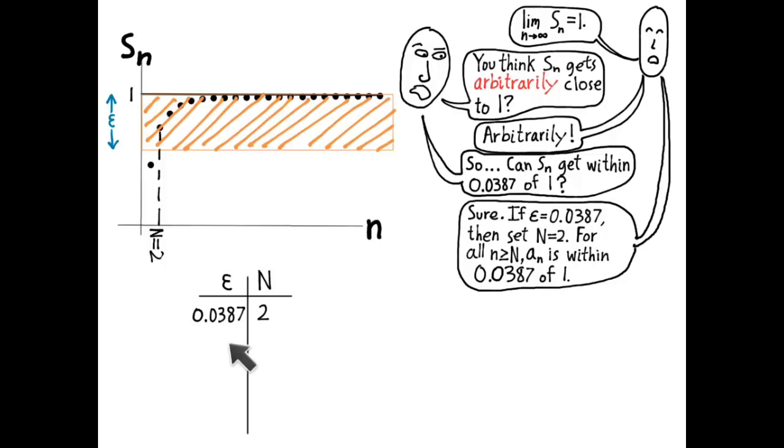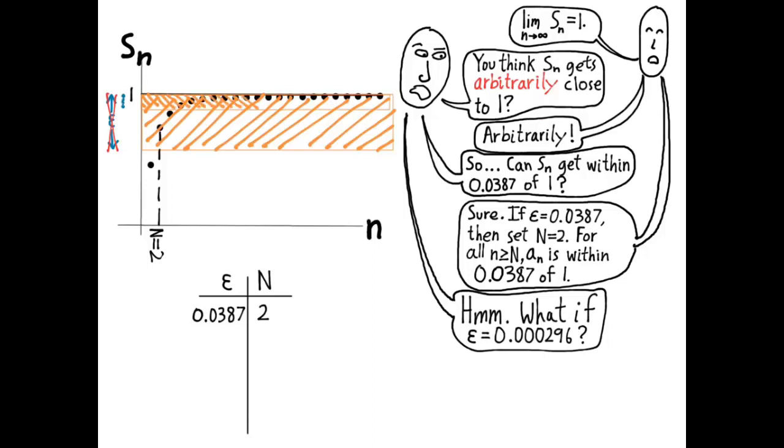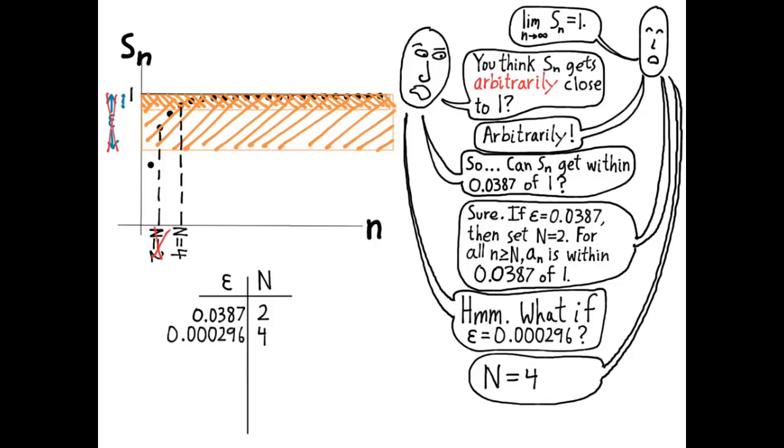And I've started making a table. He was challenged with the value 0.0387, and he gave as a response, capital N equals 2. But then, the second guy starts to feel that maybe he needs to make a tougher challenge. So, he says, hmm, what if epsilon equals 0.000296? As you can see, that's a much smaller envelope. Now, we've shaded that envelope in, and our new value of epsilon is much smaller. Can the first guy meet that challenge? And the answer is, yeah, he meets it by saying, suppose N equals 4. Everywhere to the right of 4, we're within that envelope.